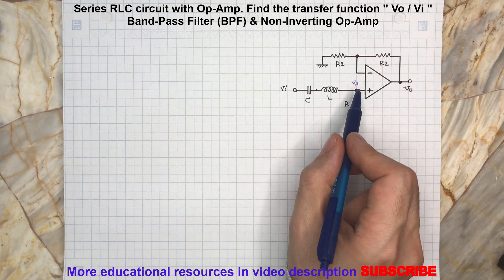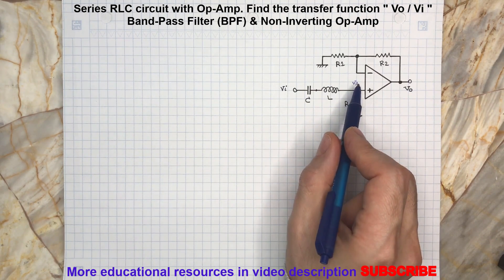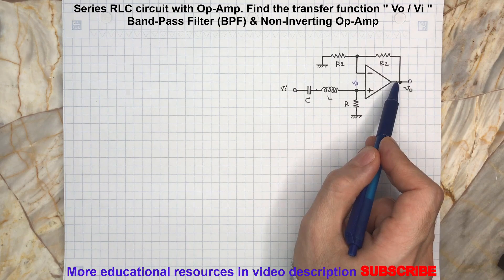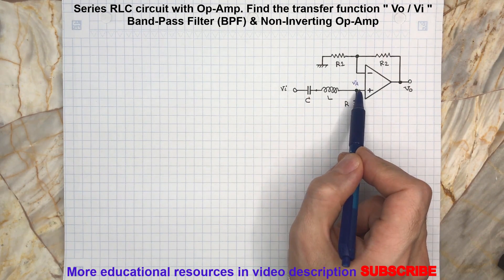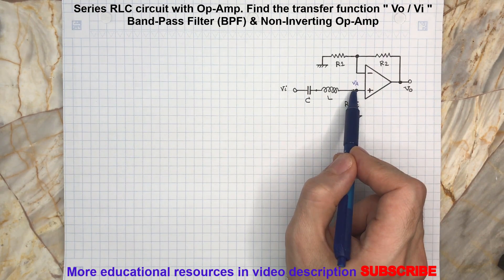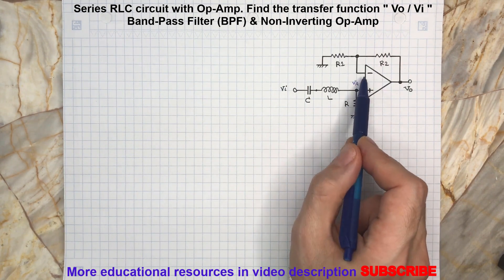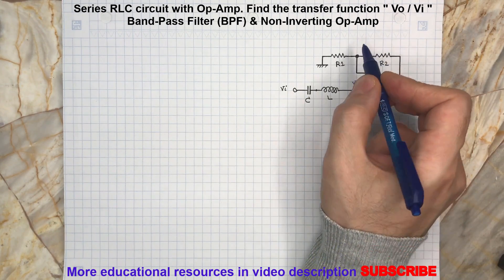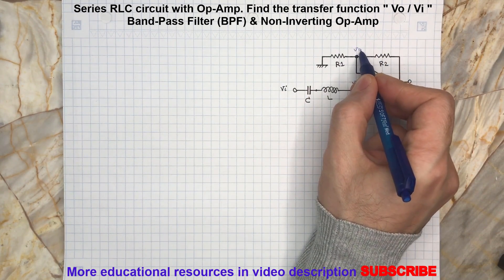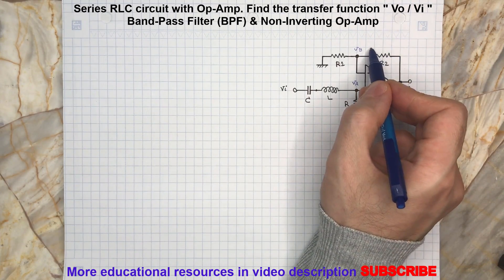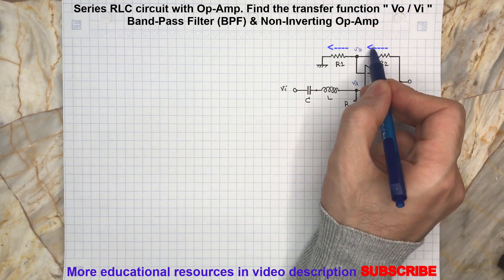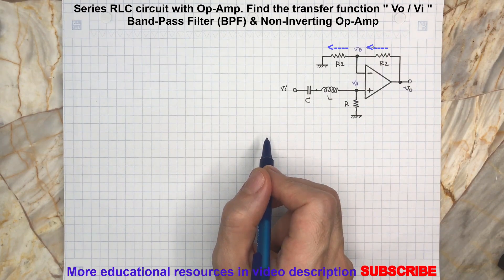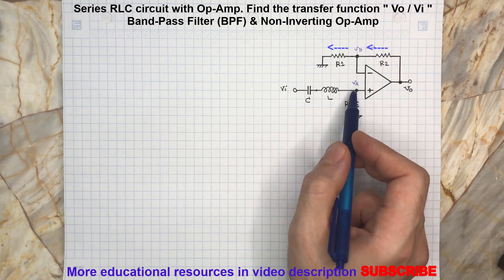By finding the voltage at Va, we can calculate the voltage at Vo, knowing that there is no current flowing in or out of the op-amp terminals. So we can calculate Vb as well, and then we can calculate Vo. Let's start with finding Va.